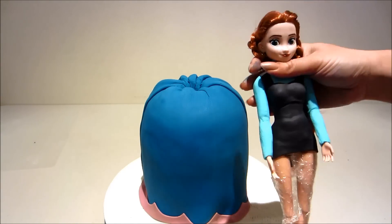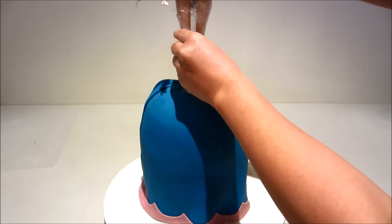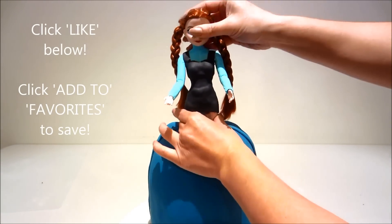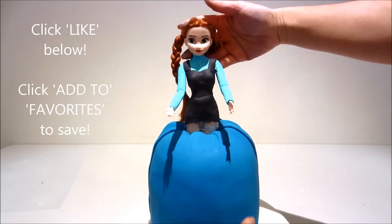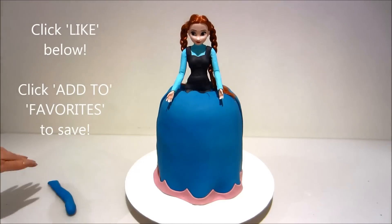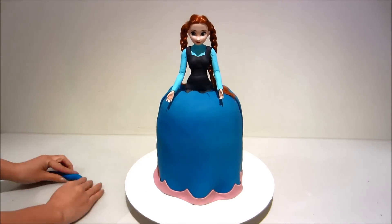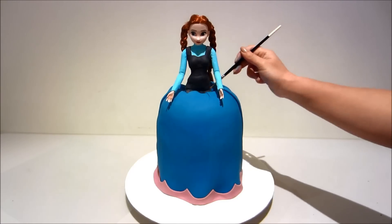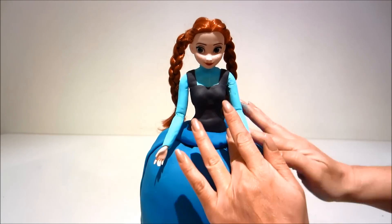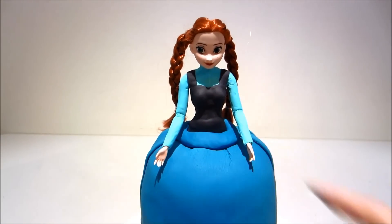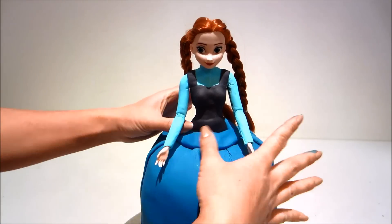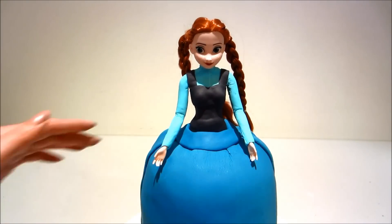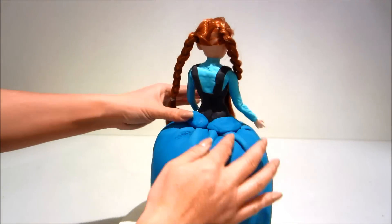Okay now inserting her into the cake. Don't forget to click the like button below if you do like this tutorial and click add to favorites if you want to save it. Okay now rolling out a long strip of blue fondant and attaching it around where the join of the doll and the cake is, gently pressing down to shape it and cutting any excess off at the back.